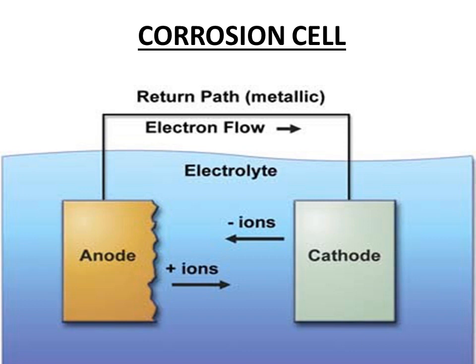In this diagram we can see an anode, a cathode, an electrolyte, and a metallic return path. The anode is corroded and the cathode is protected. This is actually the principle of cathodic protection, and it is also the principle of galvanic corrosion.